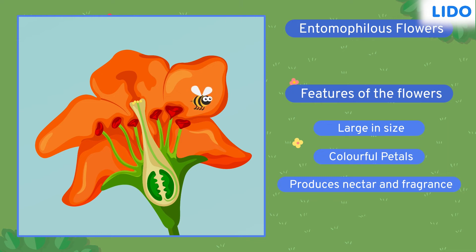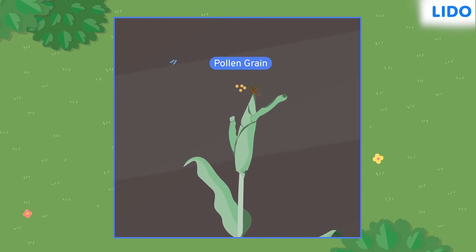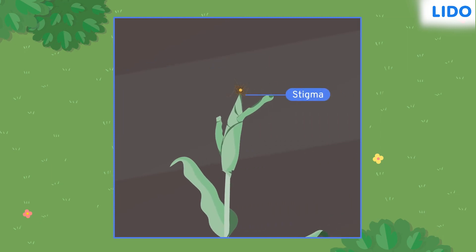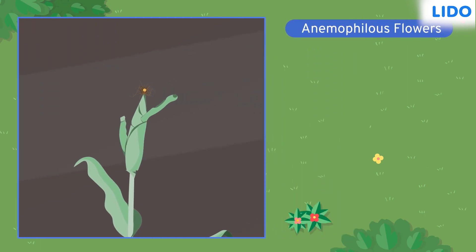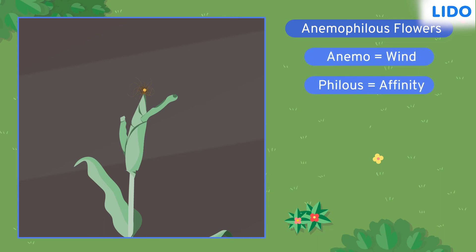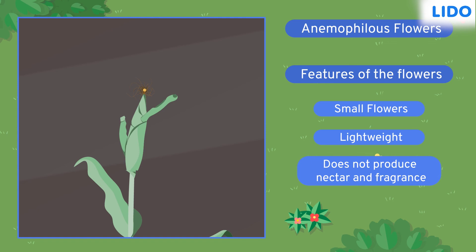Do all flowers pollinate through insects? No. The pollens of some flowers are so small and lightweight that they are carried by the wind. The pollens reach the stigma via wind and thus pollination takes place. Such flowers are called anemophilous flowers, as 'anemo' means wind and 'philous' means affinity. Since these flowers don't need to attract insects, they do not produce nectar and they are not attractive in terms of color and fragrance.